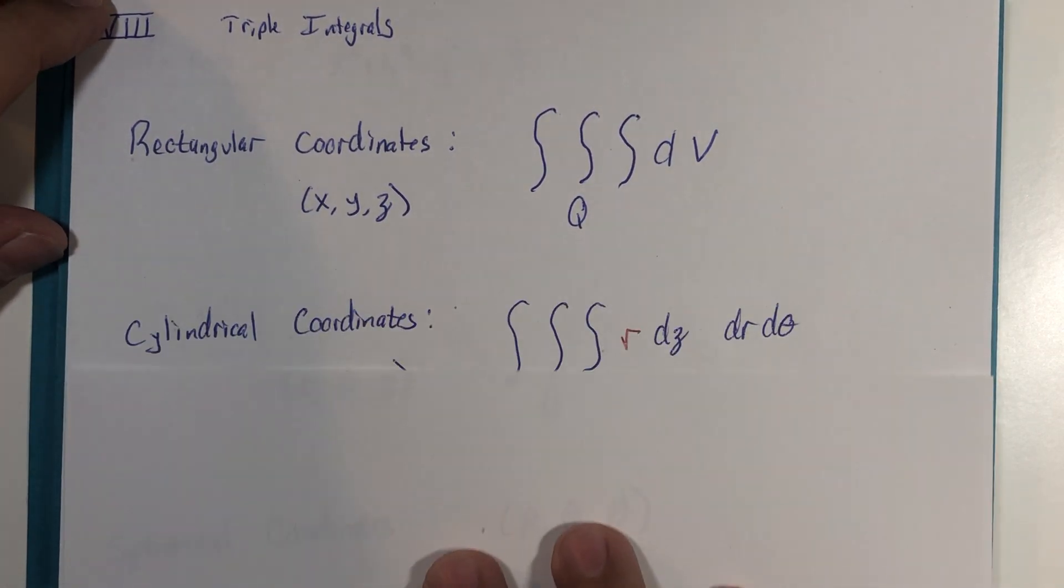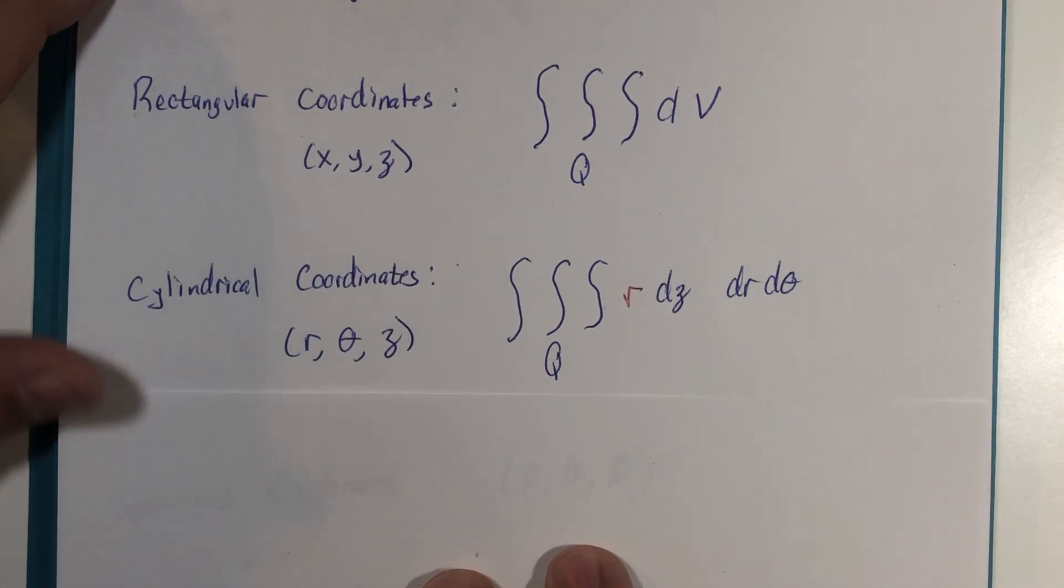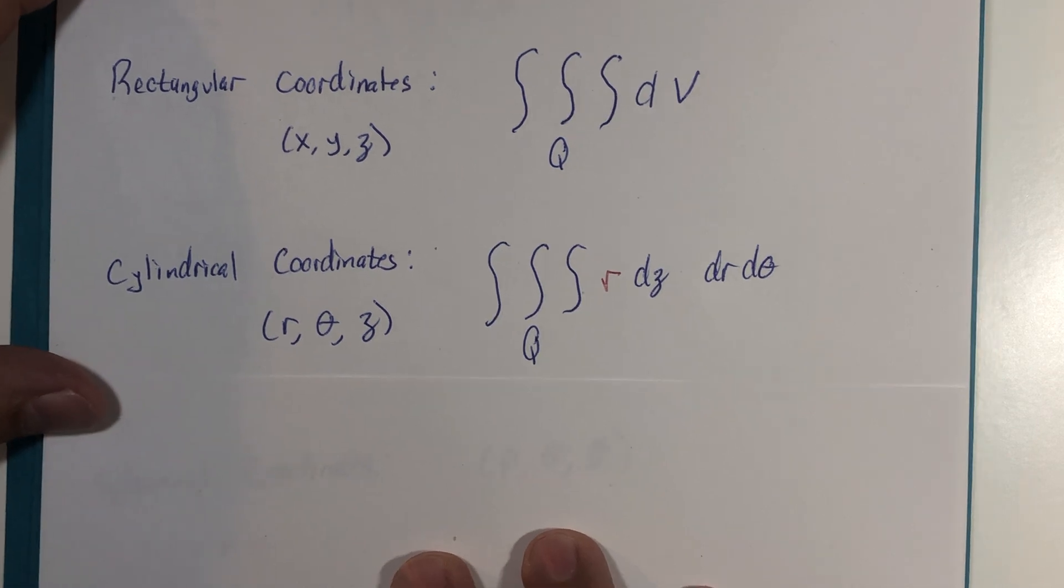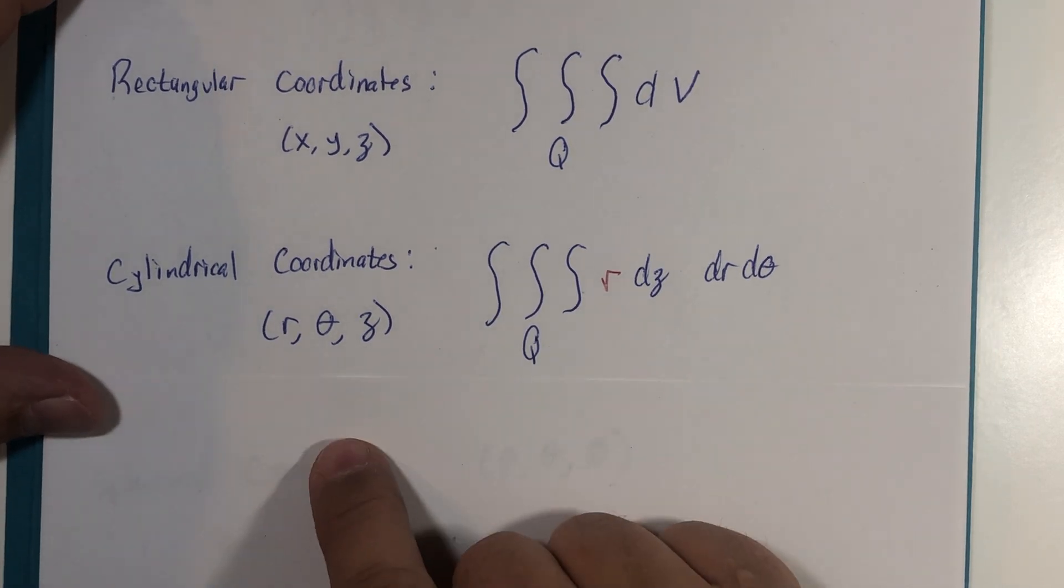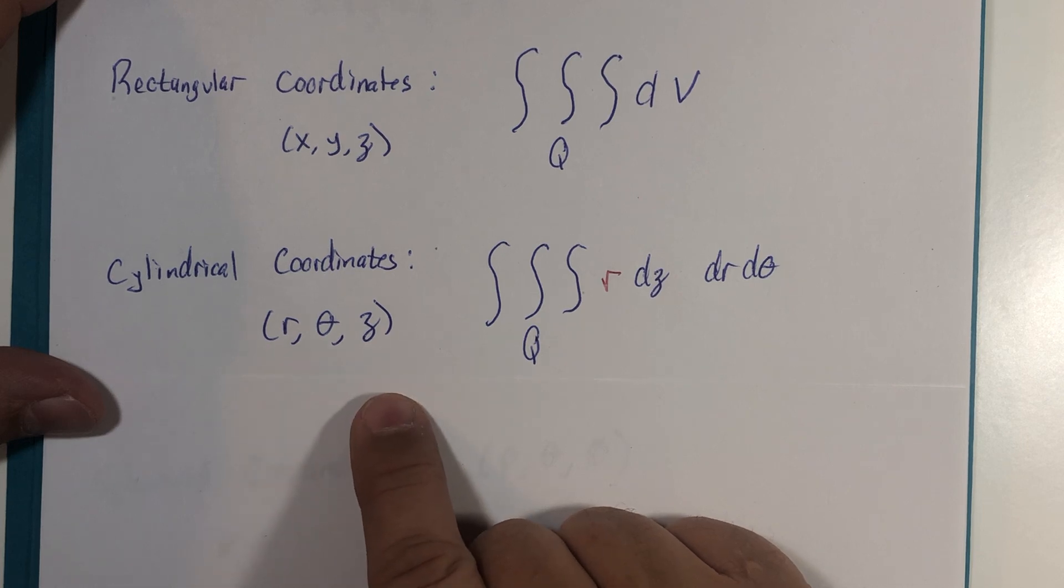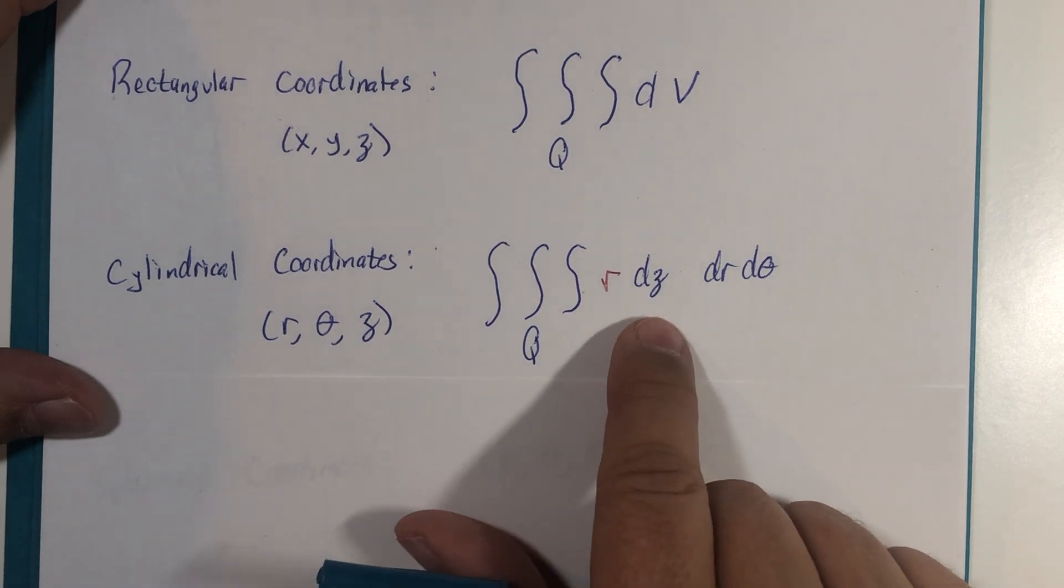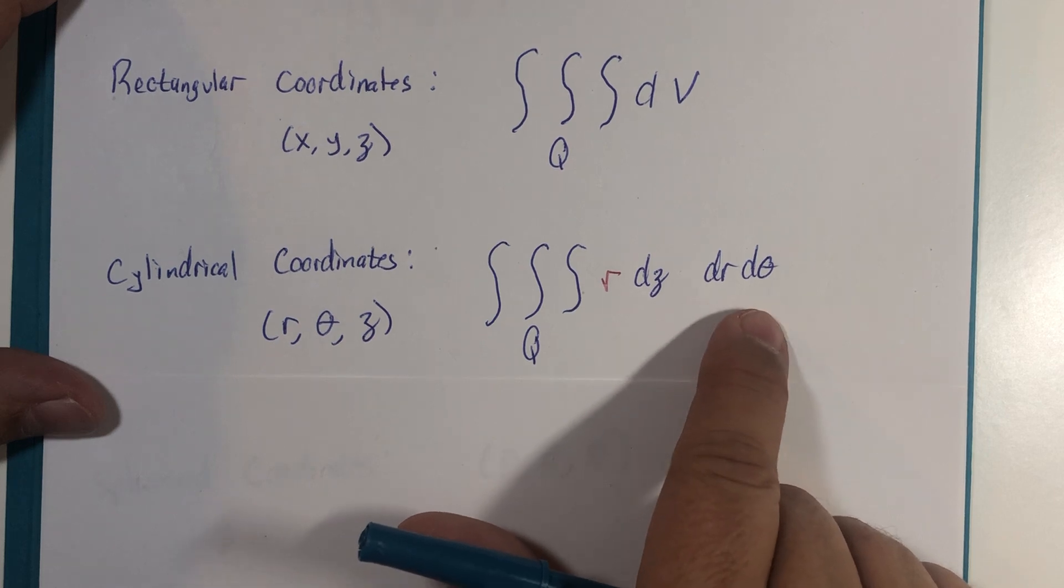We also have cylindrical coordinates where, if you think of it as polar coordinates with z as the third dimension, or polar plus z, we would have dz and then x and y would be converted to r dr.